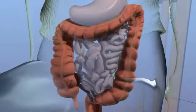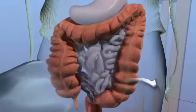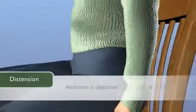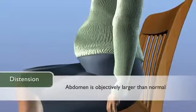Accumulation of gas in the stomach, small intestine, or colon can cause distension, which means the abdomen is objectively larger than normal.